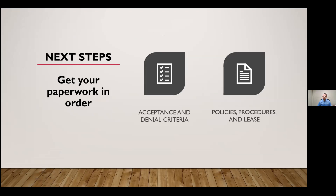Once you've outlined the answers to those questions, it's very important to get your paperwork in order. Determine your acceptance and denial criteria and whether you'll offer exceptions or mitigating circumstances. For example, completion of a drug rehab program would be noted in policies and procedures. When reviewing criminal history, distinguish carefully: was the applicant convicted, or simply arrested or charged? Just because an individual was arrested doesn't mean they are guilty. Convictions versus arrests are very important to differentiate.